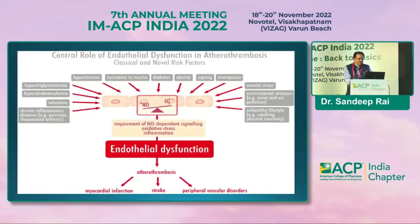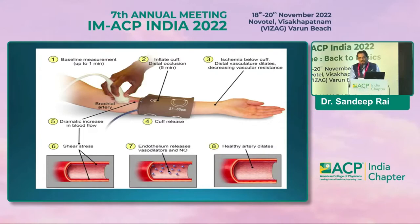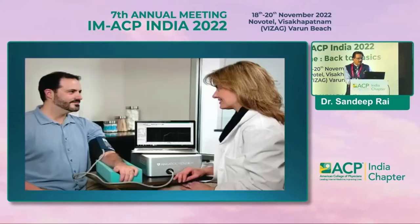Endothelial function is the first thing that starts going wrong in your vessel. We have an easy way to measure it: we compress an artery, cause ischemia, and then release it after five minutes. If your artery is healthy, the endothelium will release nitric oxide and your artery should dilate more than 8% of the normal arterial diameter. This was previously done by ultrasound; now it can be done as an office procedure even in a village.